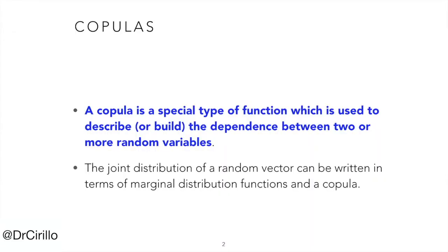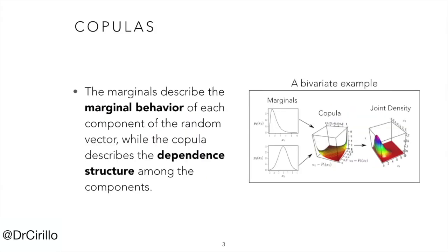A copula is a function used to describe the dependence between two or more random variables. With copulas we aim to represent the joint distribution of a random vector. In the copula approach, the copula describes the dependent structure among the components of the random vector, while their marginal behavior is contained in their marginal distributions.